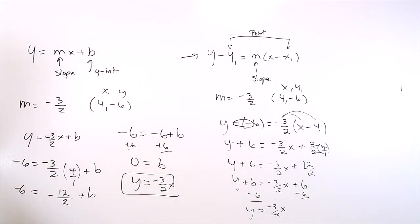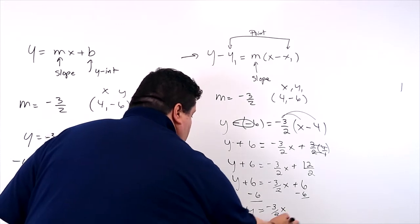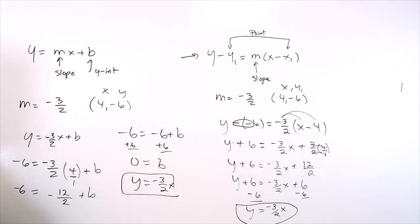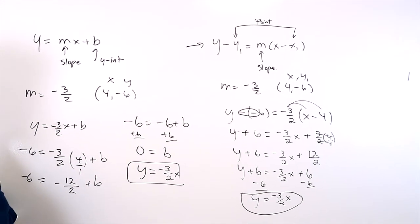Y is equal to negative 3 over 2x. And 6 take away 6 is going to be 0. So we get the same answer. So either way, you got your slope intercept form or your point slope form can solve.